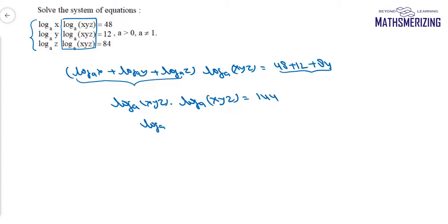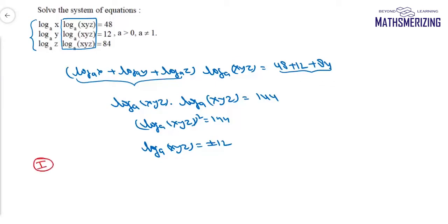This simplifies to log_a(xyz) squared equals 144, so log_a(xyz) equals plus or minus 12.